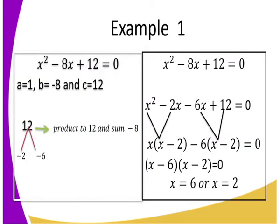Example 1. We have the equation x squared minus 8x plus 12 equals 0. That is a quadratic equation. The first step is identification of a, b, and c. My a is 1, my b is negative 8, and my c is 12.